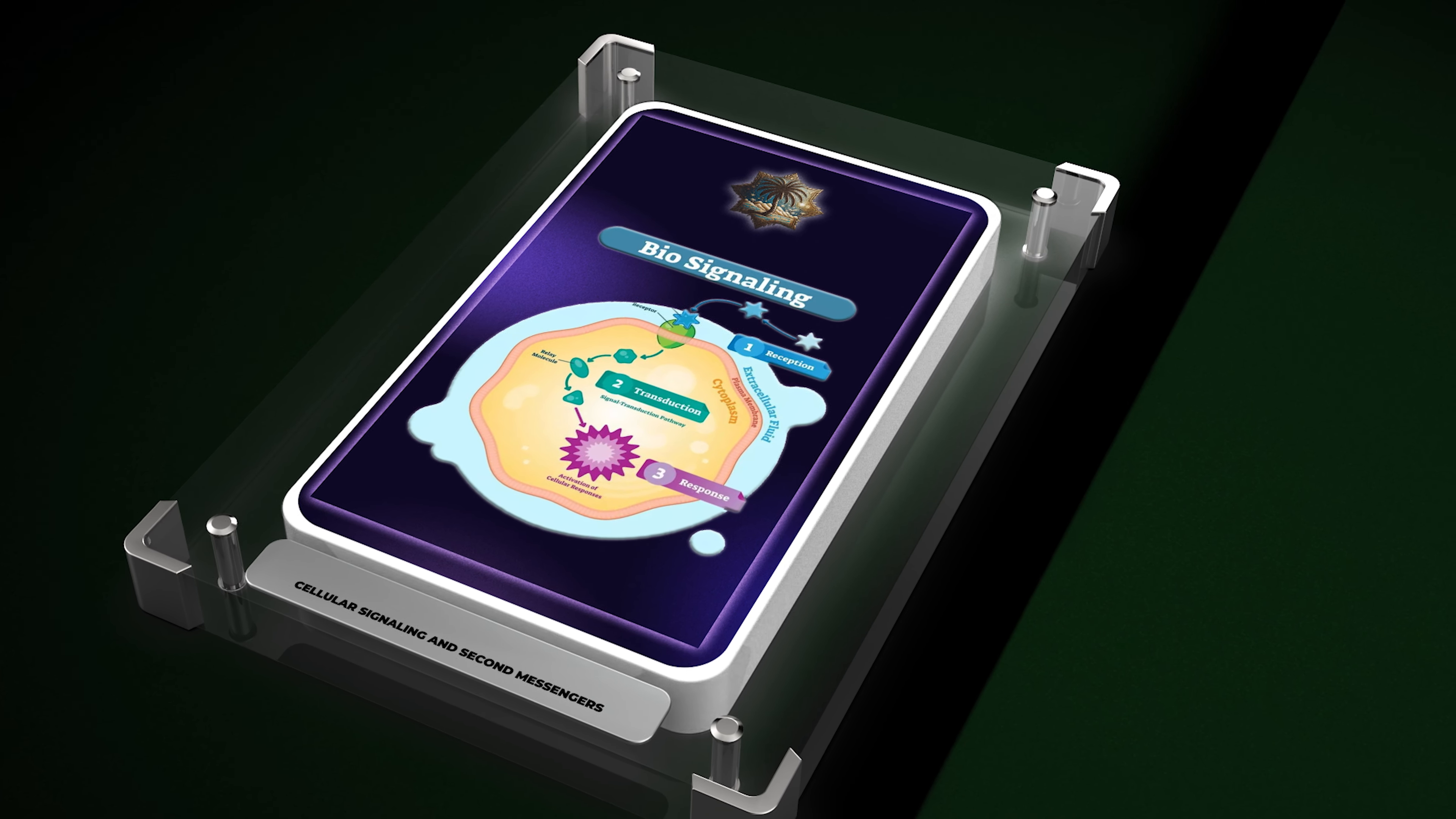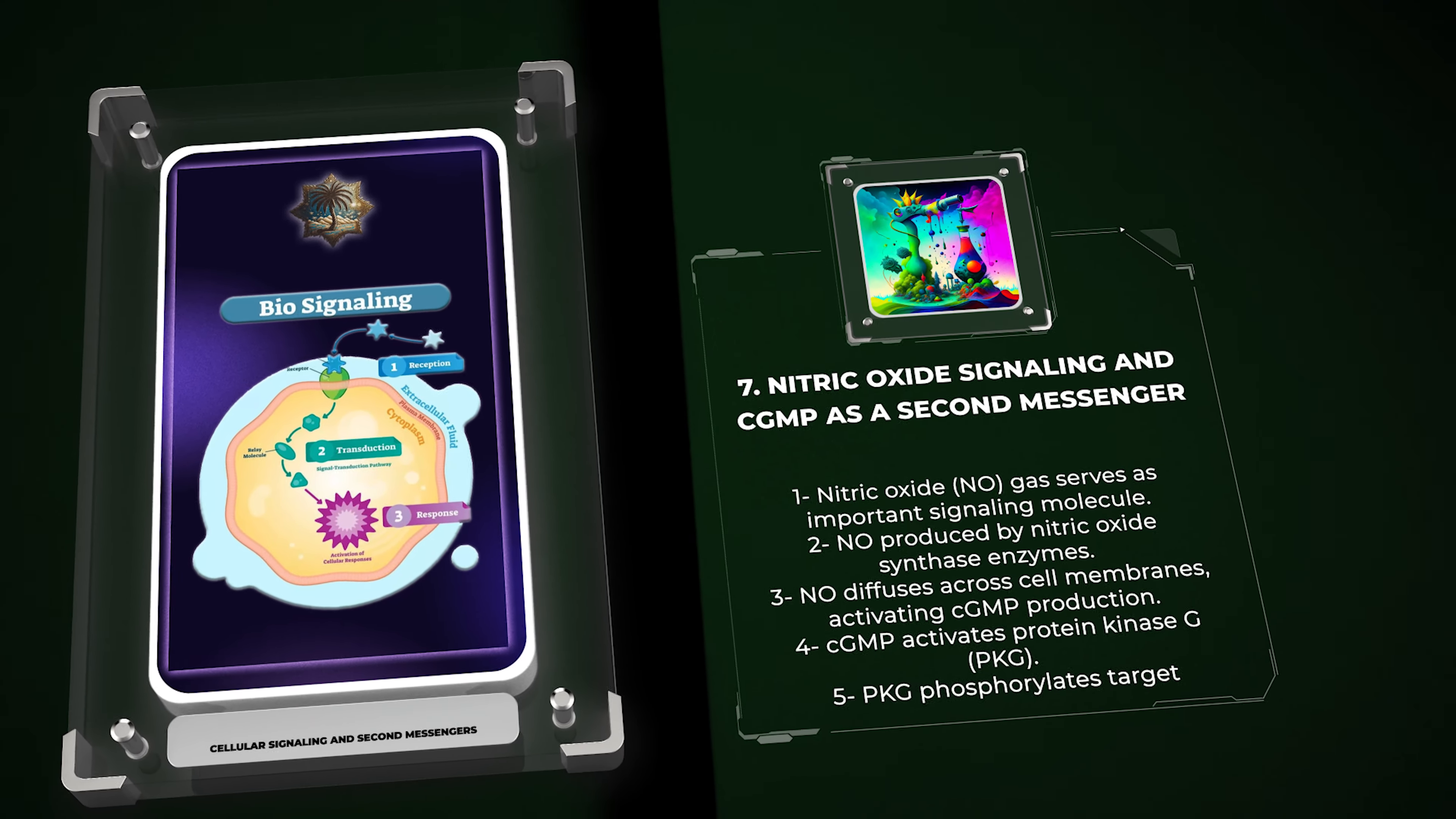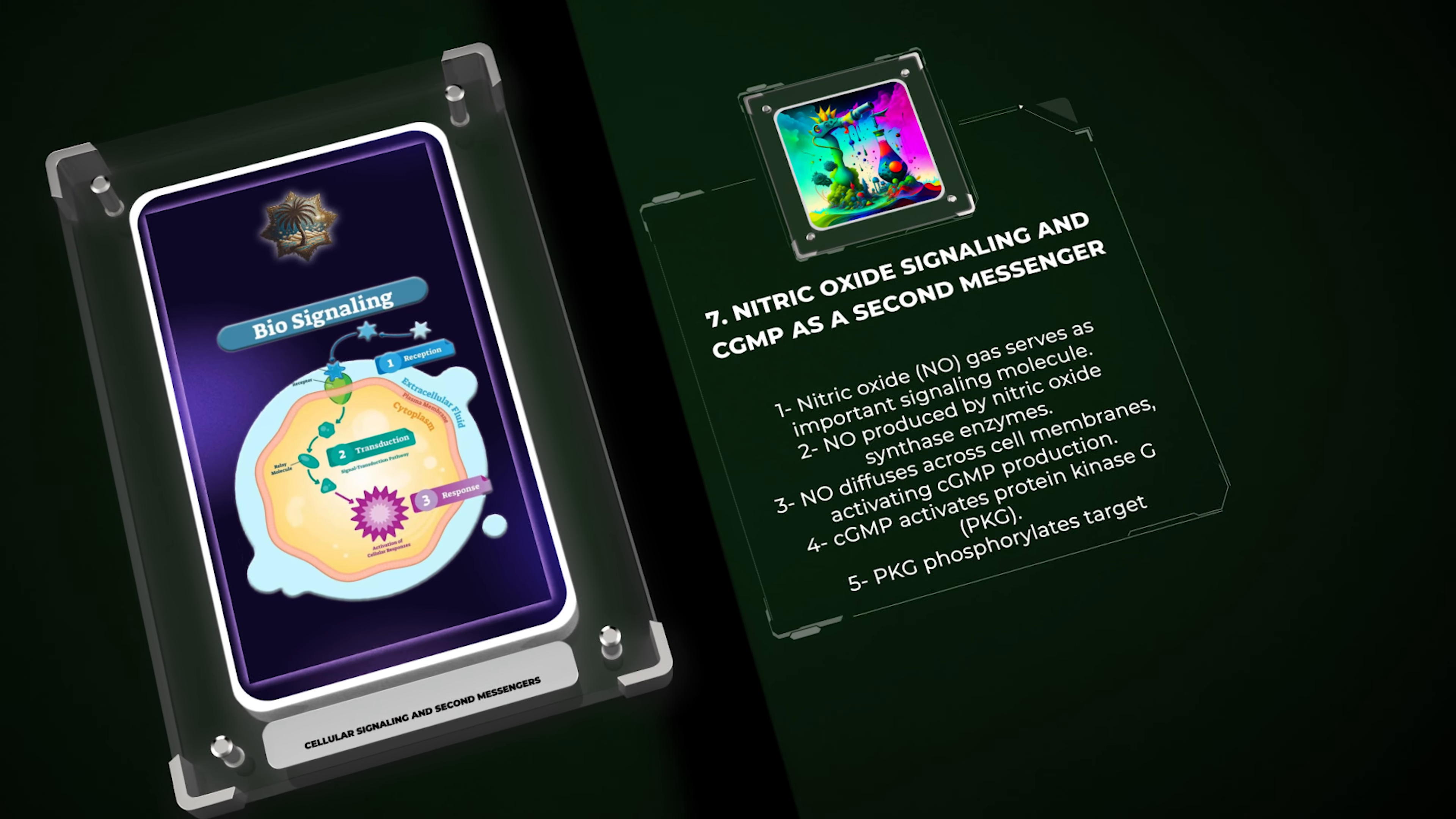Nitric oxide, NO, is a gas that serves as an important signaling molecule in various physiological processes. It is produced by nitric oxide synthase enzymes and diffuses across cell membranes, activating the production of cyclic guanosine monophosphate, cGMP, by guanylate cyclase.